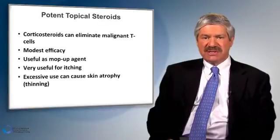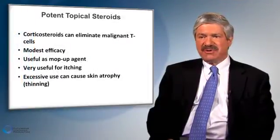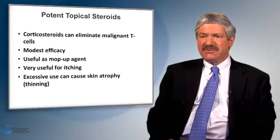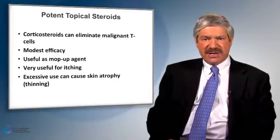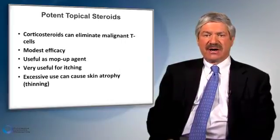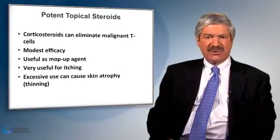Topical corticosteroids are quite useful as so-called mop-up agents. Some therapies may not reach protected areas such as the groin, buttocks, or armpits — for instance, certain forms of phototherapy — leaving residual areas that require mop-up therapy, where potent topical steroids are very useful. They are also helpful for controlling itch. One reason we avoid chronic use is that they can lead to skin thinning, also known as skin atrophy.